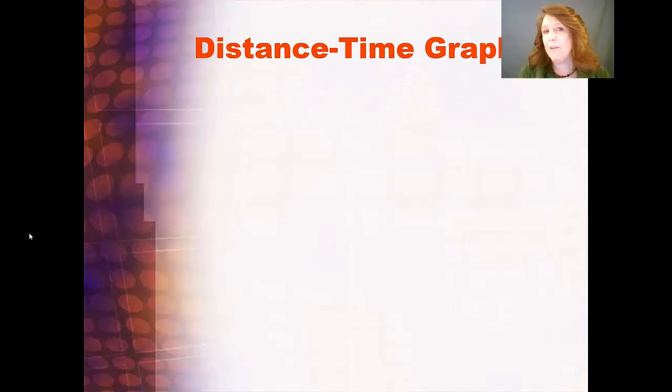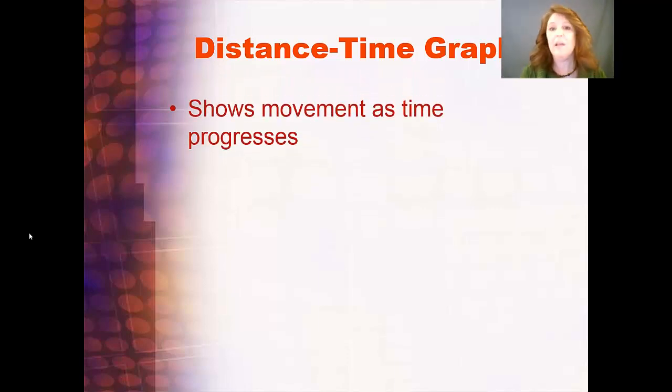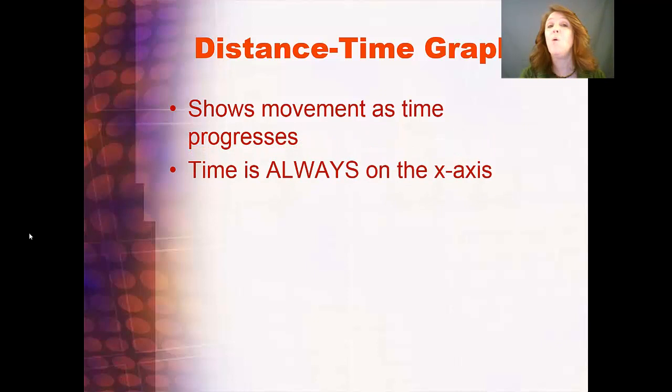We're going to do a little bit of graphing so we can keep track of our data and be able to display our data. A distance-time graph shows movement as time progresses. Time is always on the x-axis, along the bottom, so that as you're looking at the line, you're looking at the line as time goes by. So that you know that in the first part of whatever time you had, this happened, and then this happened, and then this happened. From this perspective, it's a left to right version, so you can almost be reading that line.